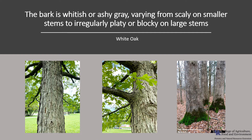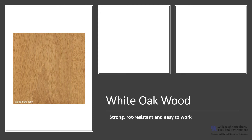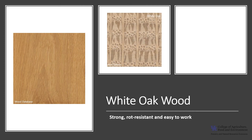The bark is light ashy gray and can be very variable in appearance. On small to medium-sized trees it's often broken up into small aligned blocks that are scaly on the surface; as the tree matures, the bark is irregularly plated and fissured. The heartwood of white oak is typically a light to medium brown and the sapwood is light brown. The grain is straight with a coarse uneven texture. Oaks are ring porous with rows of large pores, as you can see in the photo here.